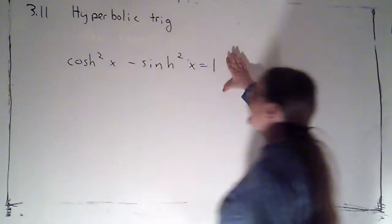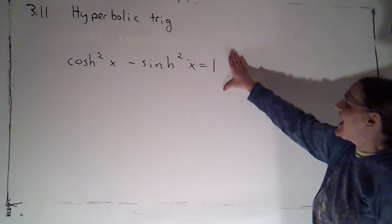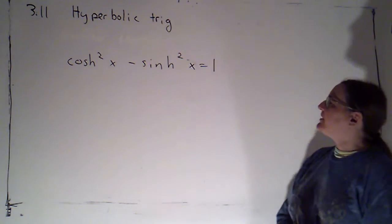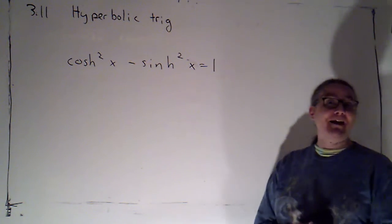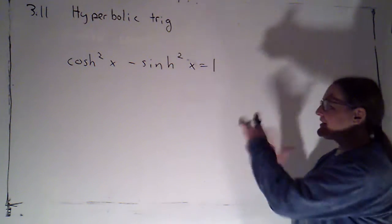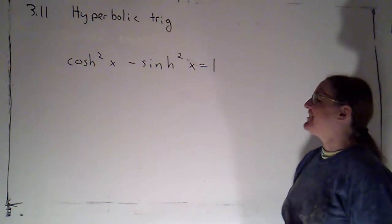I've got this hyperbolic trig identity up here on the board. It doesn't have a name like the Pythagorean identity the way our Pythagorean identity for regular trig does because it doesn't correspond to the Pythagorean theorem, but it's the hyperbolic generalization of that.